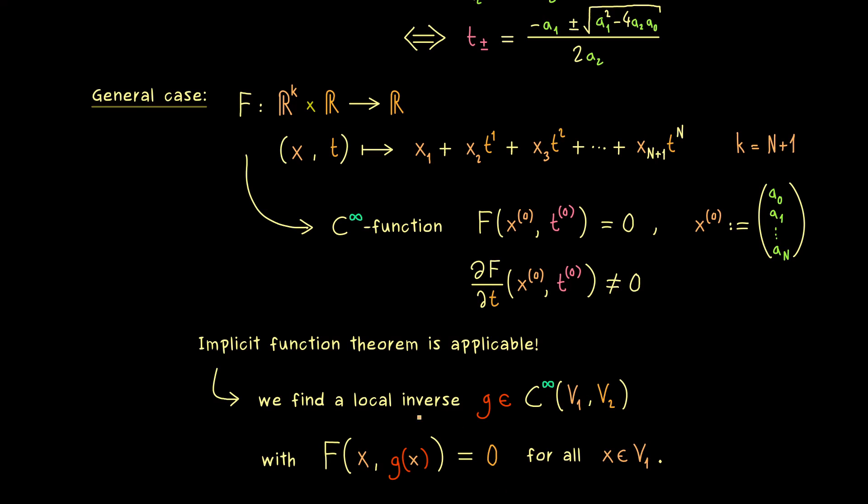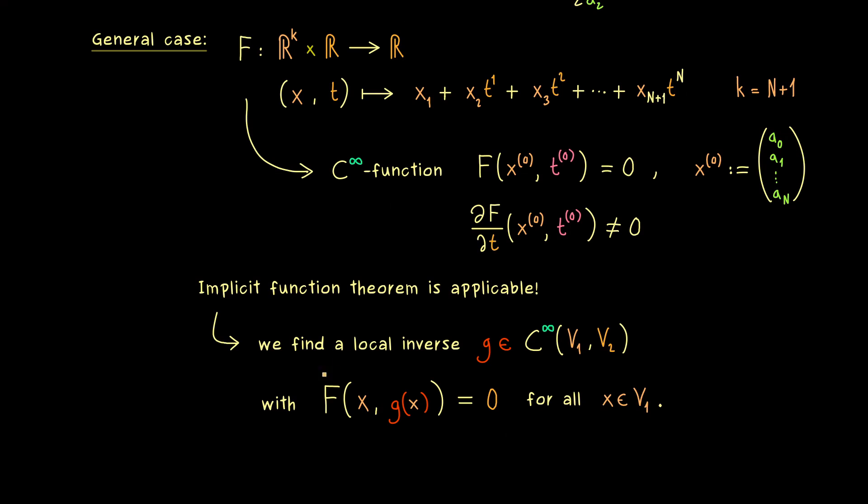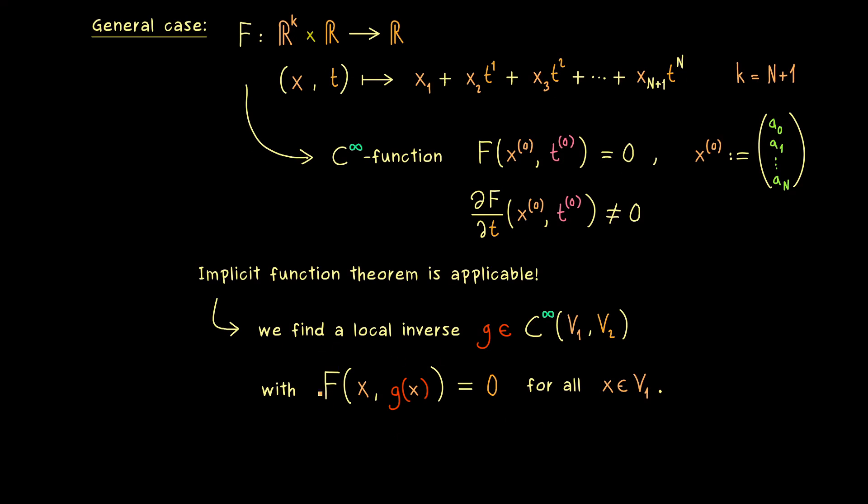And this one output we can put into capital F again. And then we have this equality for all points in V₁. So we see that g(x) is the simple zero as a function of the coefficients. And in addition we also get that this works in a C∞ way.